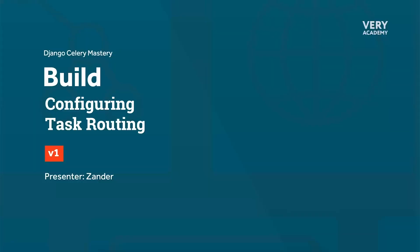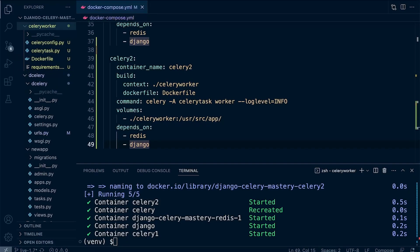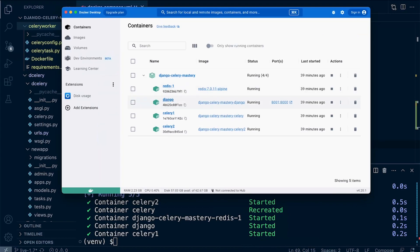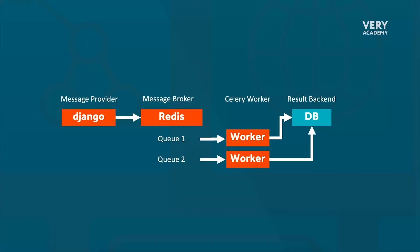Let's start our journey with task routing by setting up two tasks with two routes and two Celery workers. We're building on top of what we've already created — we have our Django app, our Redis backend and message broker, and Celery one and Celery two as our two workers. Initially, the Django app sends tasks to the message broker, which stores them, and the Celery worker picks up and executes the task.